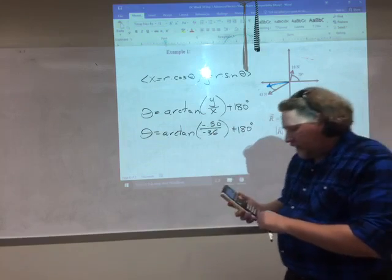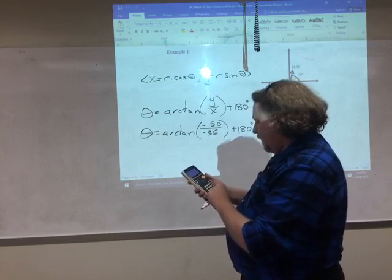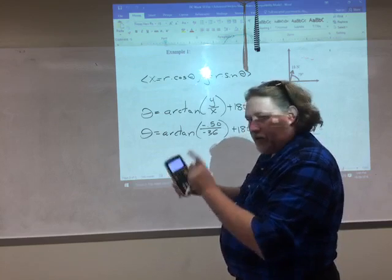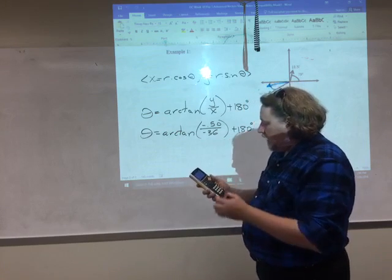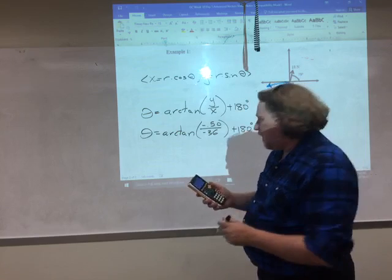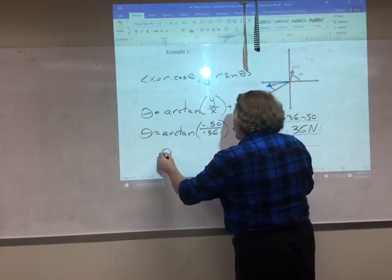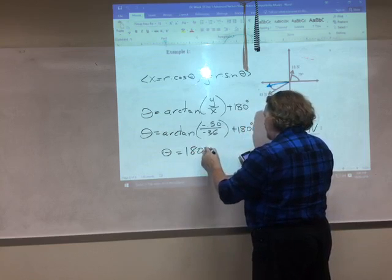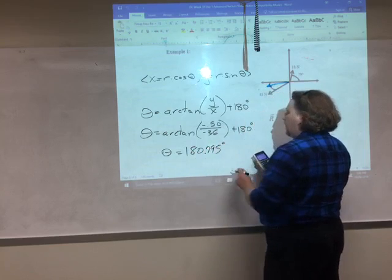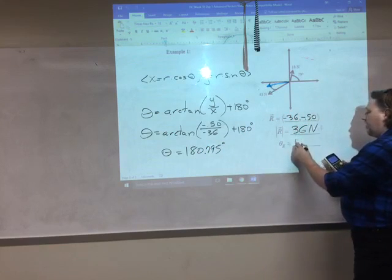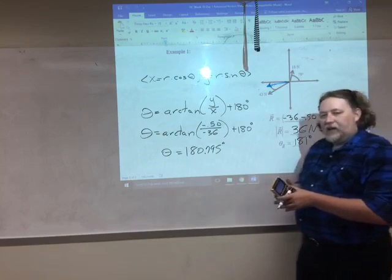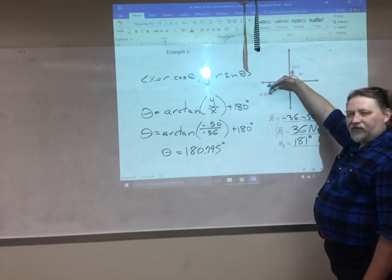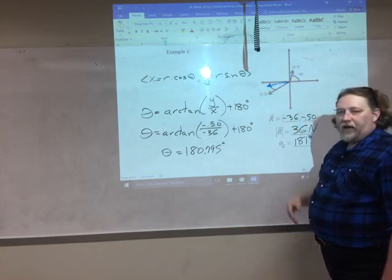So go into my calculator here. Here we go. Arctangent, negative 0.5, divide negative 36, close the parentheses, add 180, gives me 180.795. Angle is 180.795 degrees. And so we'll round that to 181 degrees. And so there we are. I know the overall effect is a 36 newton force happening just slightly below directly to the left.